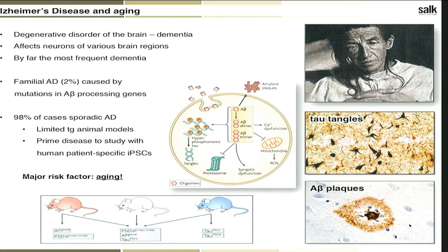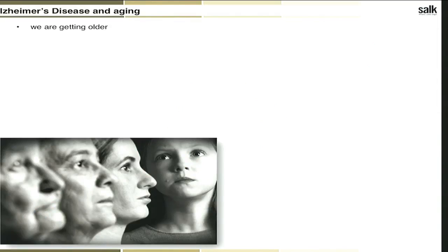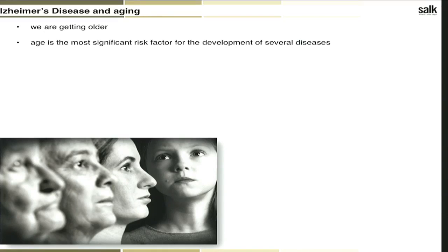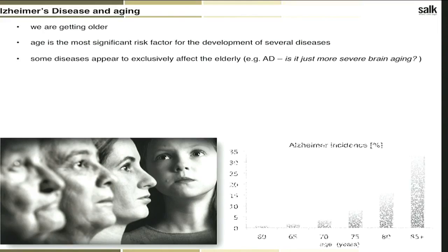When thinking about Alzheimer's disease — especially sporadic AD — we have to take into account that aging is by far the most significant risk factor. We don't know so much about the biology of cellular aging. One thing we know for sure: it affects us all. Aging is the most significant risk factor not only for Alzheimer's disease but for many diseases. AD seems to exclusively affect old people, which has led some to say it's not really a disease on its own, but more severe brain aging.